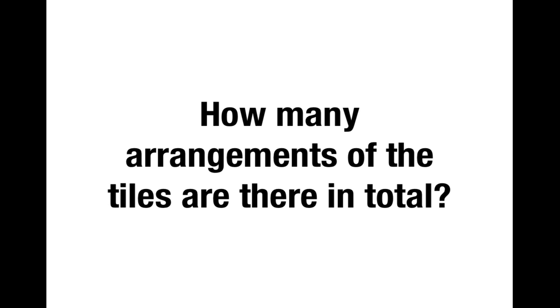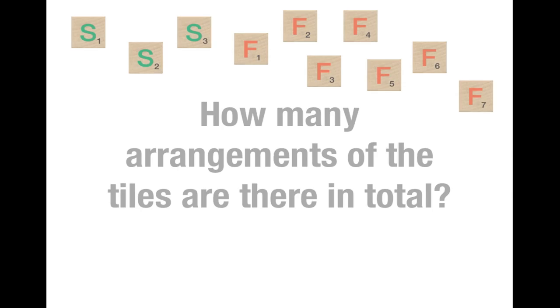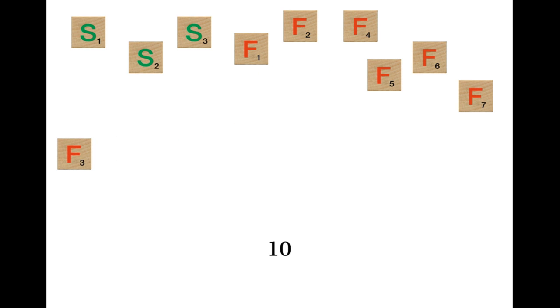Let's deal with the first question: how many arrangements of the tiles are there? So let's suppose that we're going to put the ten tiles down one at a time, going from left to right. For the first tile, there are ten options because you've got ten tiles to choose from. We can pick any of these tiles — suppose that we pick F3. Next, we've got to pick a second tile, but at this stage there are only nine tiles left, so there are only nine possibilities for the second tile. This means that overall there are ten times nine possibilities for the first two tiles.